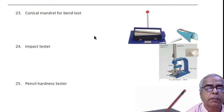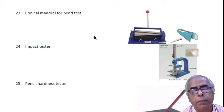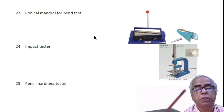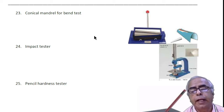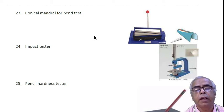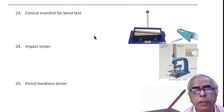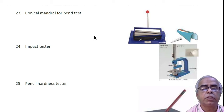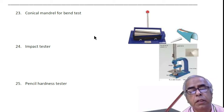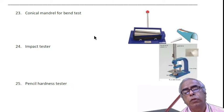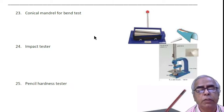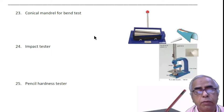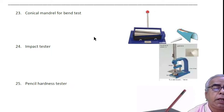Impact test: based on the requirement or specification, a weight around 250 grams or even 500 grams can be made to fall on the painted panel. We study the impact resistance of the coating, whether there is any film crack or lack of adhesion of paint.